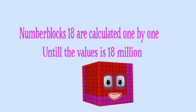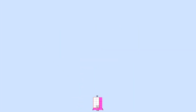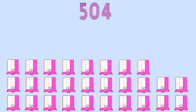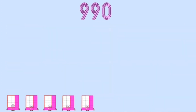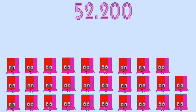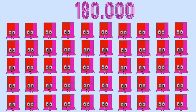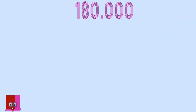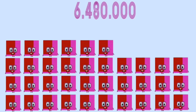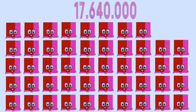Number blocks 18 are calculated one by one until the value is 18 million. Values shown: 1,800, then 180,000, then 18,000,000.